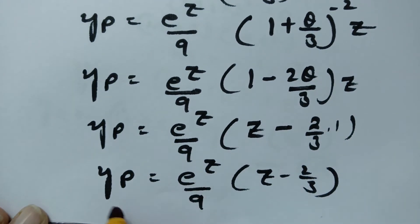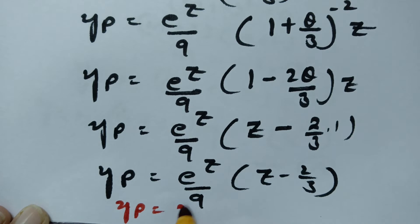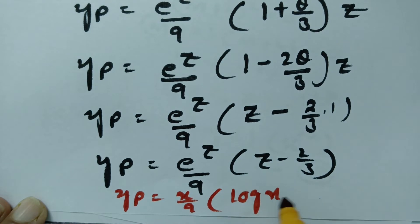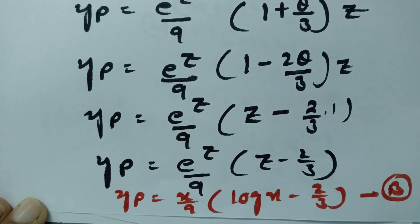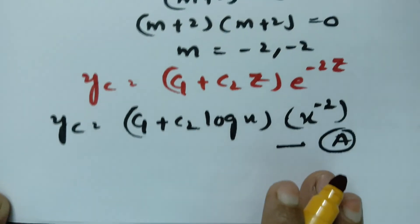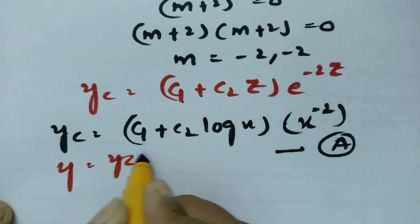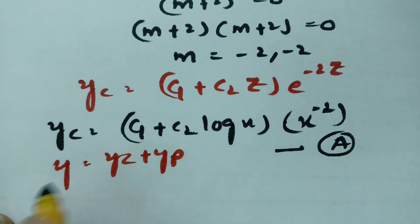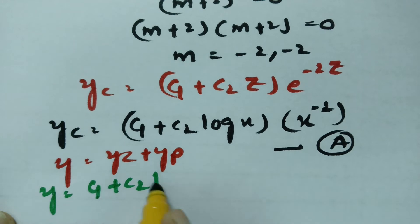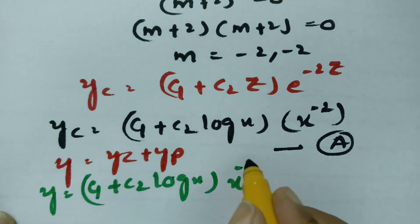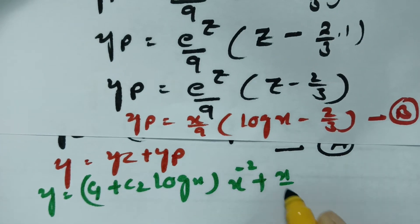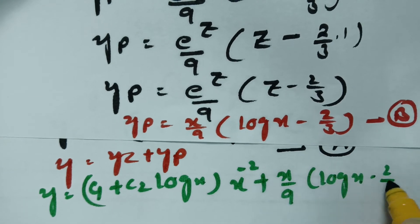Substituting back: e to the power z equals x and z equals log x. So yp equals x over 9 times (log x minus 2 over 3). The general solution is y equals yc plus yp, which is (c1 plus c2 log x) times x to the power of negative 2 plus x over 9 times (log x minus 2 over 3).